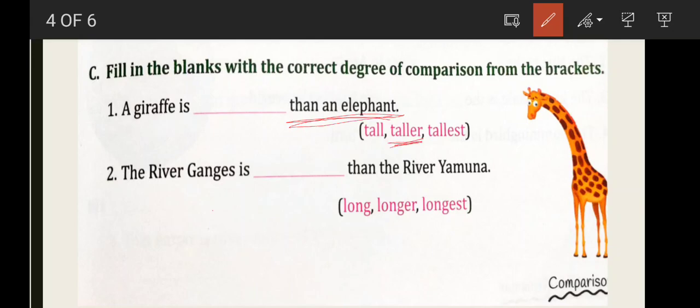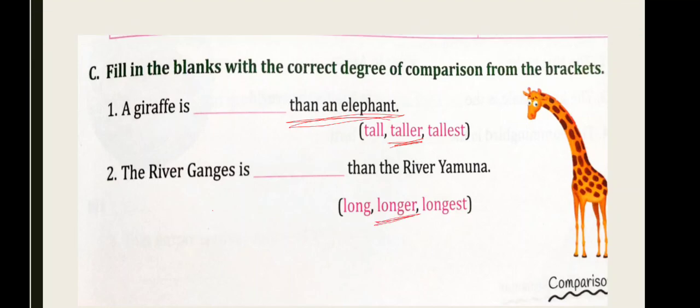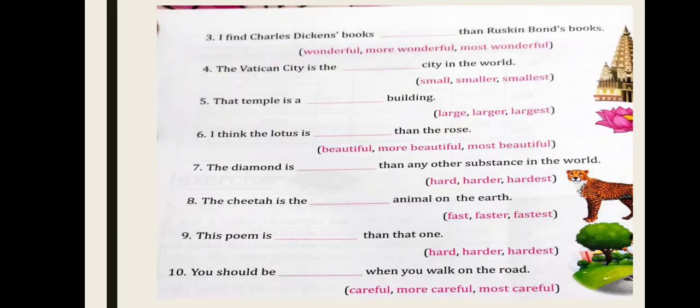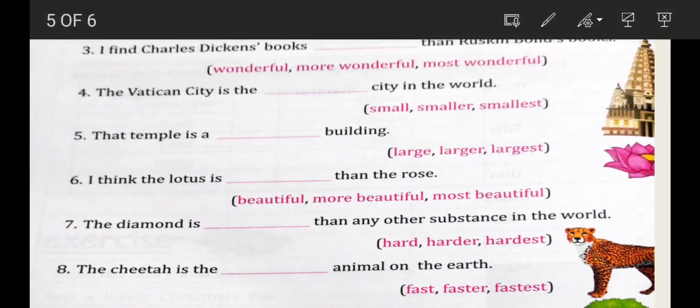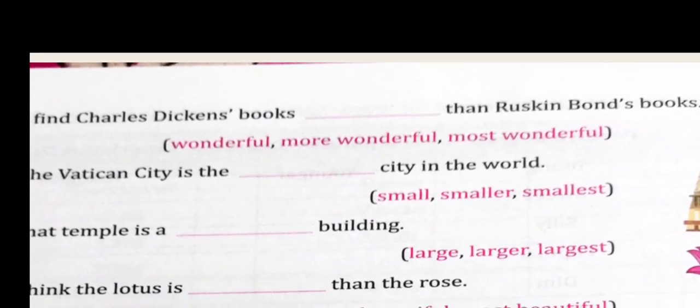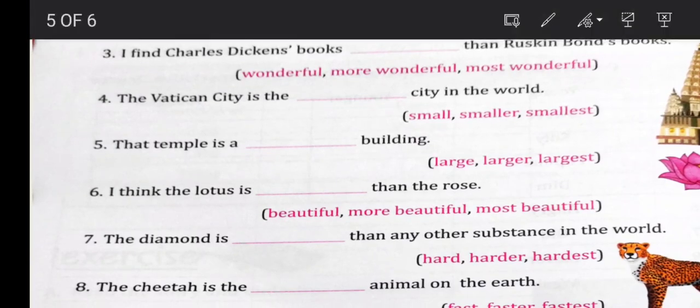The River Ganges is longer than the River Yamuna. Compare, when comparing two things, it's comparative degree. I find Charles Dickens books are more wonderful than Ruskin Bond's books. The Vatican City is the smallest city in the world. When comparing with the whole world, it's superlative. The temple is a large building. Not comparing with anything, so positive.